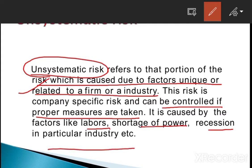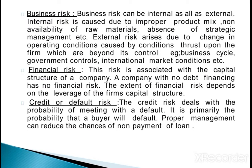There are three kinds of unsystematic risk. First is business risk — internally and externally. Second is financial risk, which is related to the capital structure of the company. Third is credit or default risk — dealing with meeting defaults, where people are not paying back loans. These kinds of risks are credit risks.